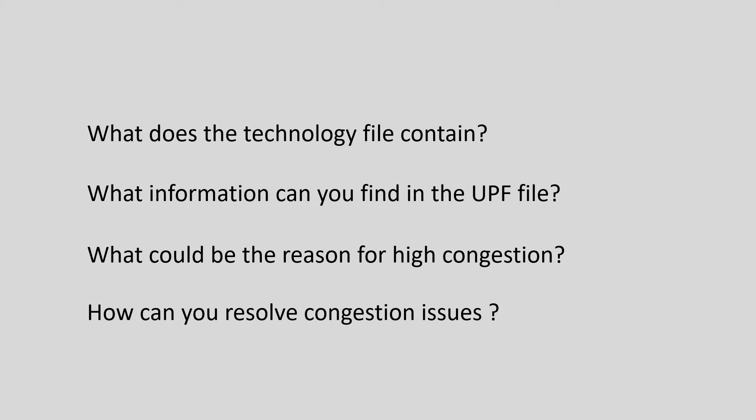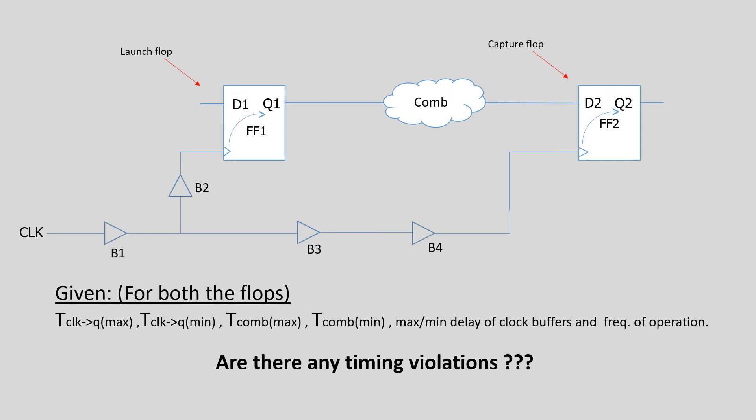After that the interviewer provided a circuit diagram. I don't remember the actual values, but clock-to-Q max and min delay for both the flops were given, along with the frequency of operation, setup time, and hold time of the flops. The max and min delay for clock buffers as well as the combinational block were also given. I was asked to check if there is any timing violation. For simplicity, the interviewer asked me to neglect the wire delays. The circuit looked something like this — plugging in the appropriate values in the setup and hold equation will give you the result.